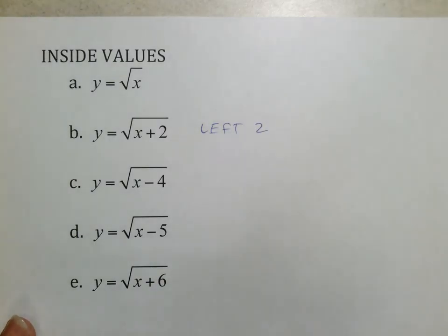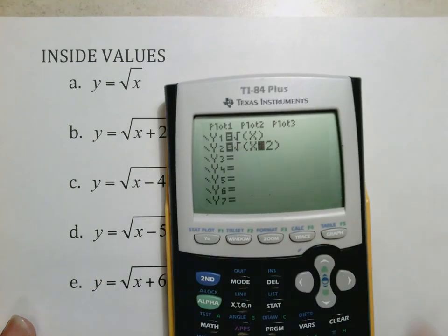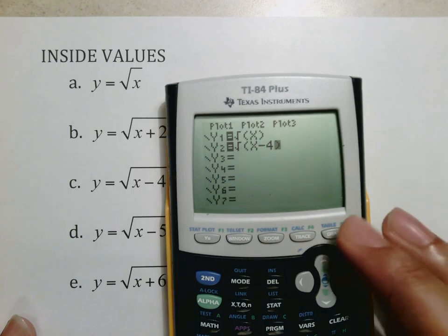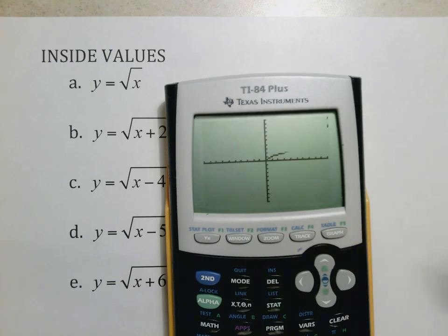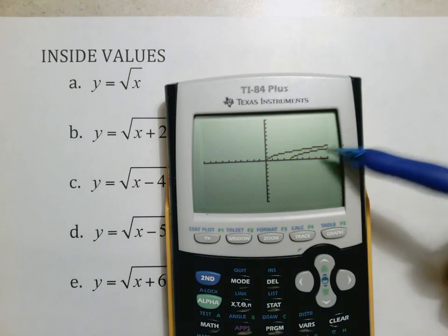If that moved it left, then this should obviously move it right. Let's just see if that works that way. Minus four should move it right four. Again, your original graph comes from the origin, yep, and there's your second one moved to the right.